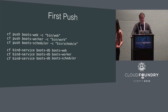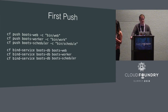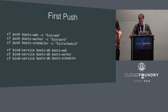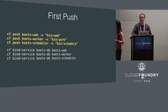So the first thing we do is push the app. This is a normal web app with a few different processes. The most important is the web process, so we push Boots web. We need a worker process to do things in the background, so we push Boots worker. And we'll have a scheduling process, so we push Boots scheduler. In order to do this, we have to push the same code multiple times with different start commands using the -c flag. After that, we'll bind our database service to each of those applications.